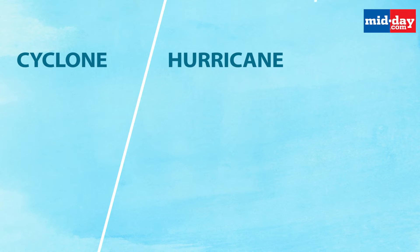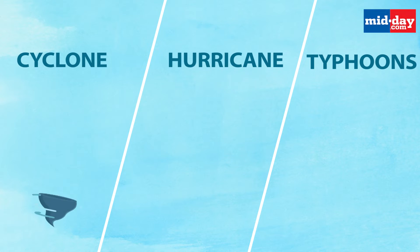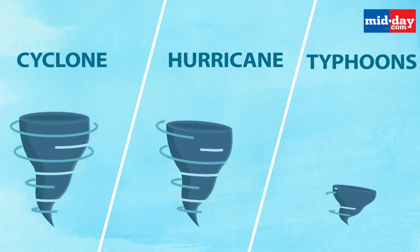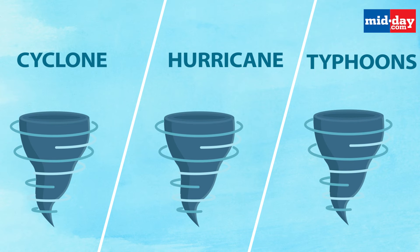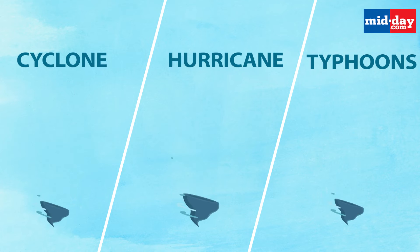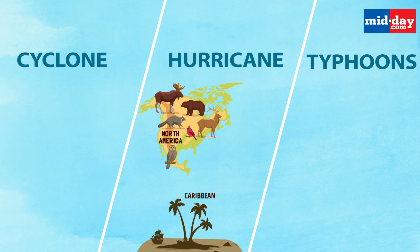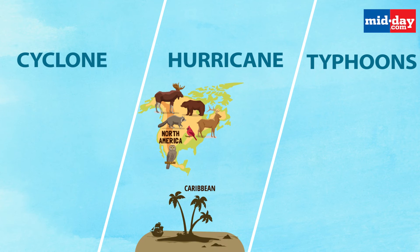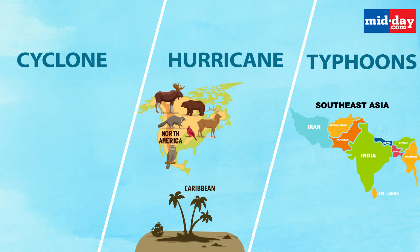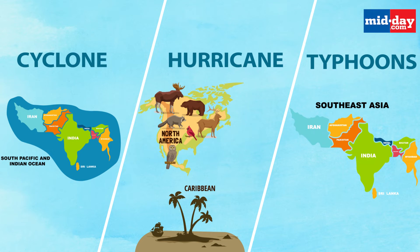Cyclones, hurricanes, and typhoons are all the same weather phenomenon. We just call it by different names in different locations of the world. In North America and the Caribbean, it is called a hurricane. In Southeast Asia, it is called a typhoon, and cyclone in the South Pacific and Indian Ocean.